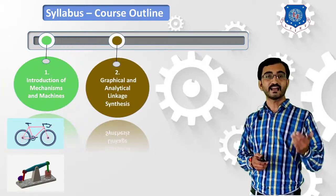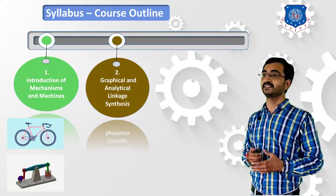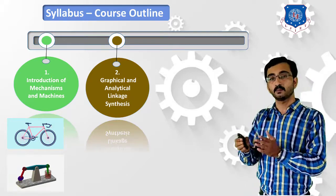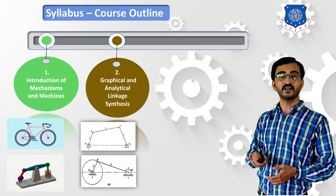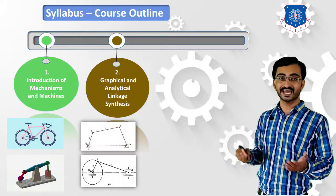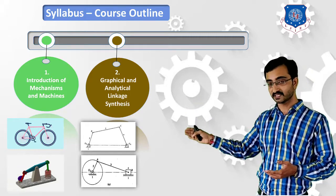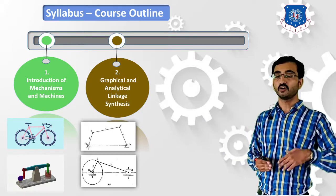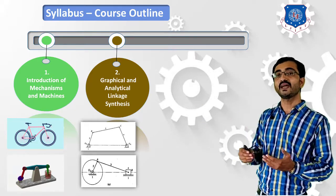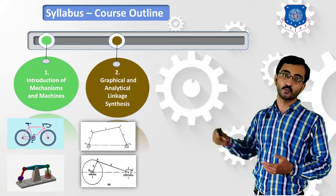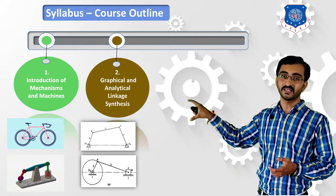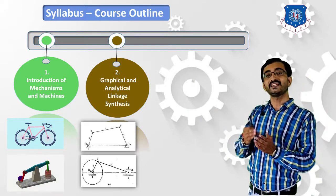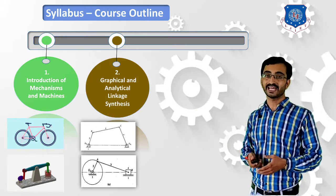In the second chapter we will learn graphical and analytical linkage synthesis. Synthesis means the designing of a new component. In the first chapter we learned various mechanisms such as four-bar chain mechanism or single slider mechanism. In the second chapter we will try to design these mechanisms — finding the lengths of various components such as the crank, connecting rod, and piston.